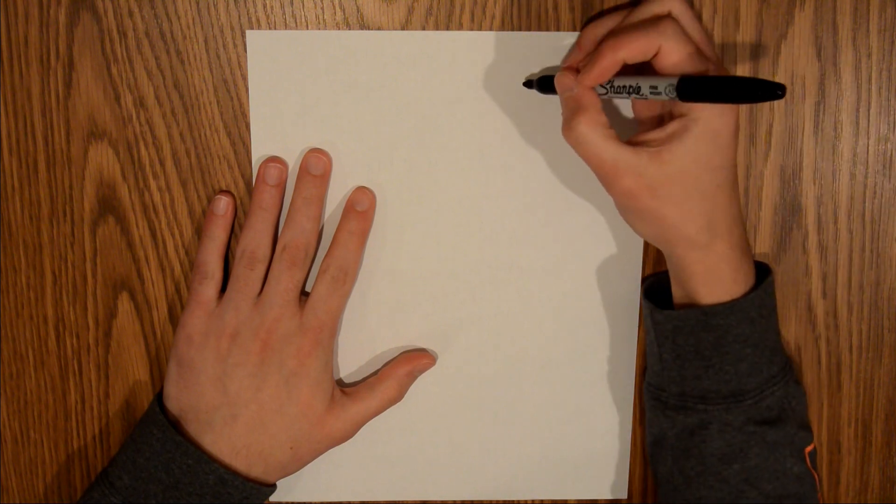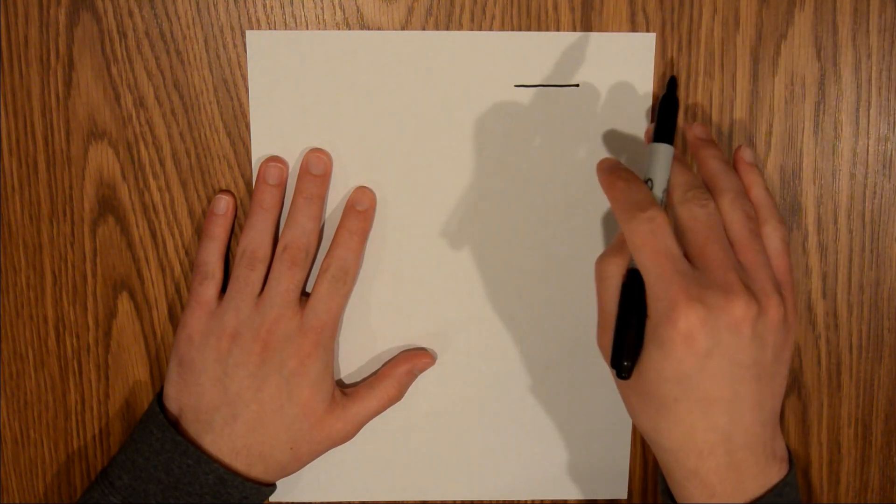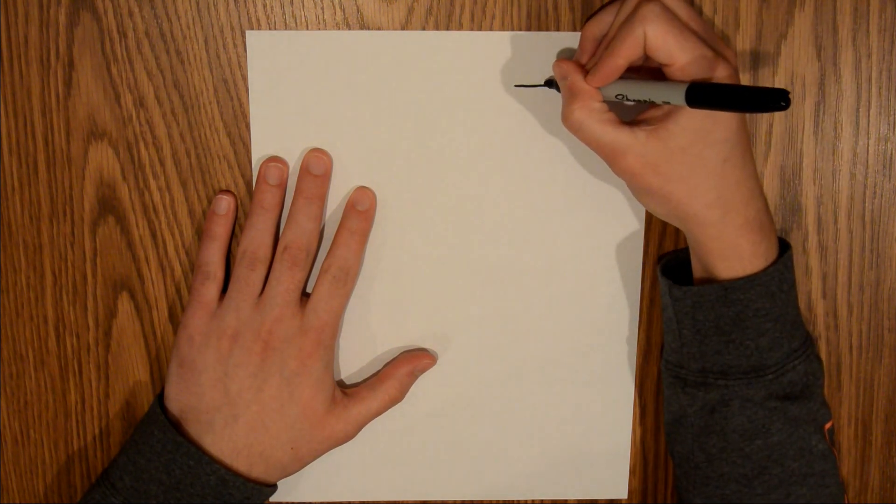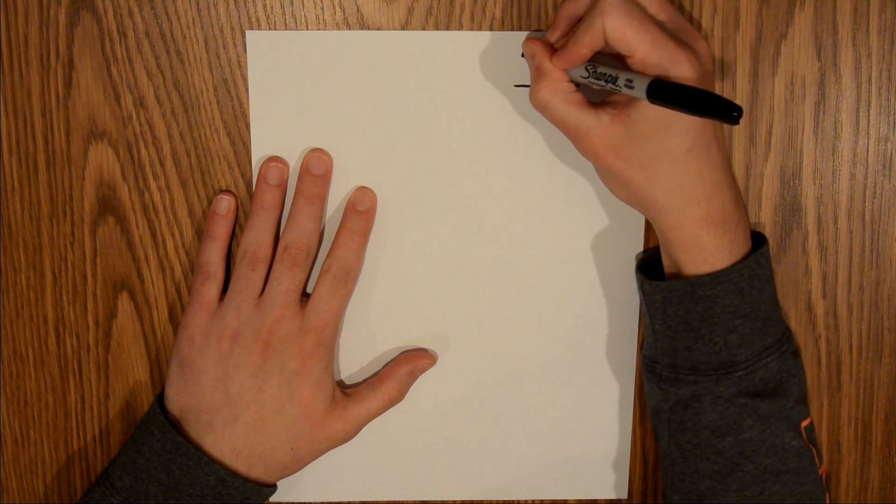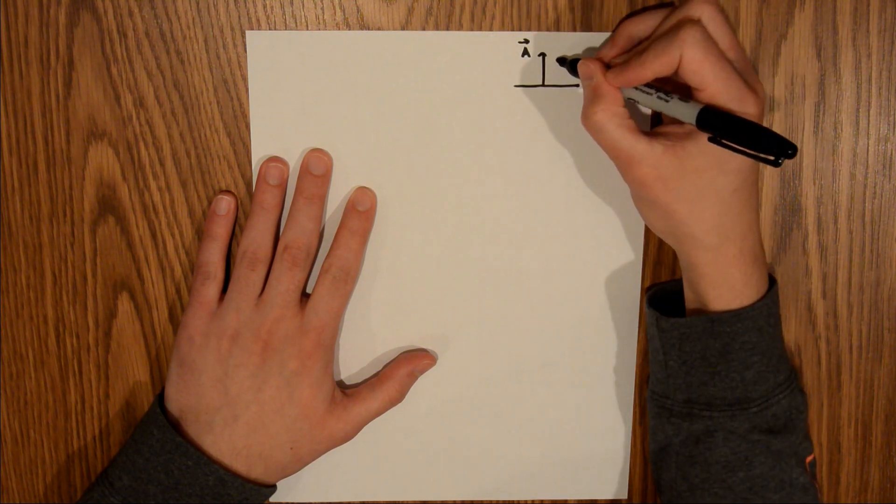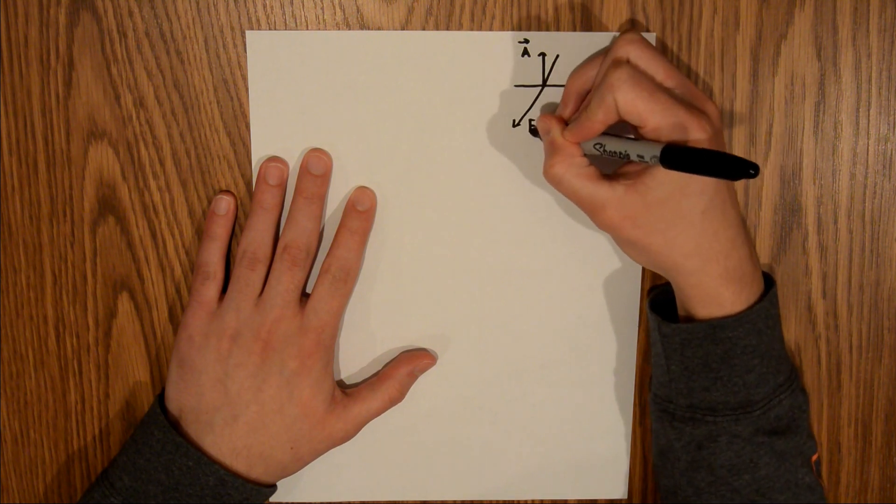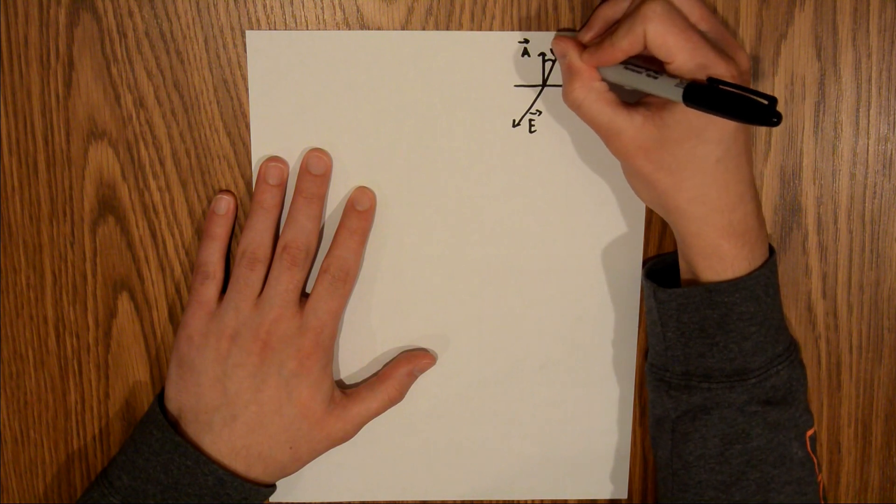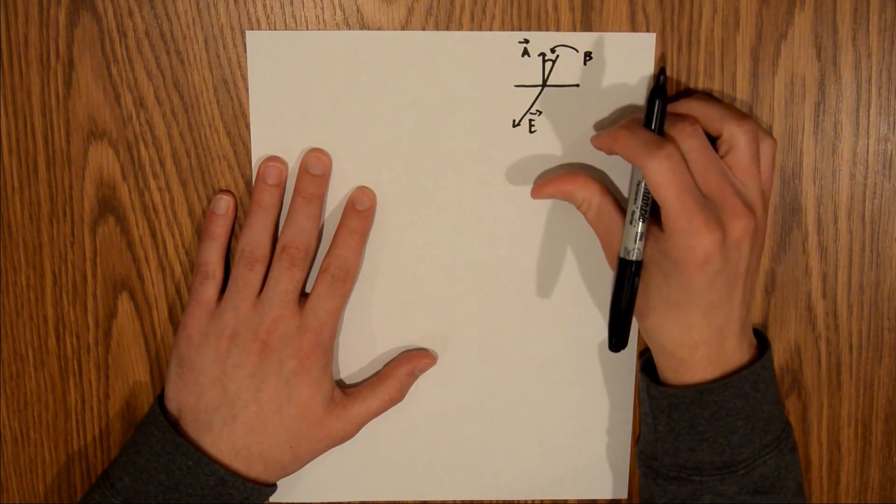The first thing I want to do is draw a little diagram. We'll say that this right here is our square surface, a side view of that square. Then we have an area vector that is normal to that surface, and we have our electric field vector just like that. We're told what this angle is, and for now, I'm going to call that beta.